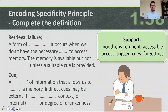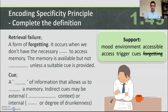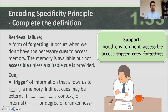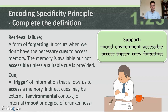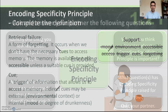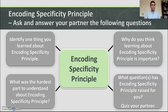So what is retrieval failure? Retrieval failure is a form of forgetting — it occurs when we don't have the necessary cues to access a memory. The memory is available but not accessible unless a suitable cue is provided. A cue is a trigger of information that allows us to access a memory. Cues may be external — environmental context — or internal, such as mood or degree of drunkenness.